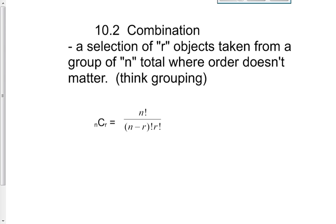In this particular section, we're doing combinations of objects. Yesterday, you did permutations. 10.1 was permutations. We had a different formula yesterday, nPr, n factorial over n minus r factorial. The definition for a combination is a selection of r objects taken from a group of n total, where this time the order does not matter. Order does not matter. Here you're thinking about a group of things. It doesn't matter how the group is put together.